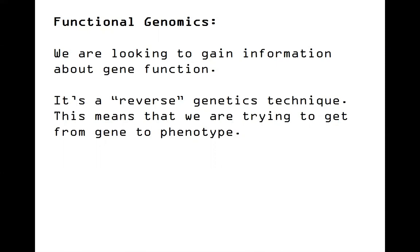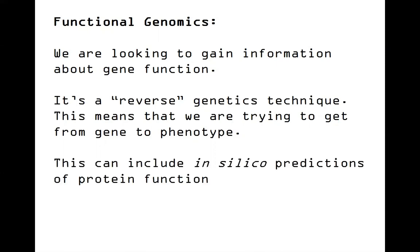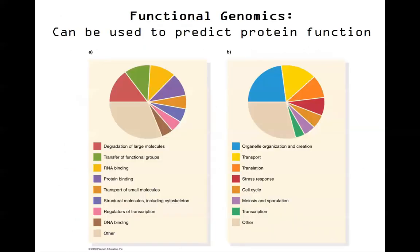We can get information about these genes through computational predictions, or in silico predictions of protein function. Alternatively, we'll also be looking at some experimental approaches today. We'll start with a general overview of how these in silico or computational predictions can help us, looking at ways to lump different genes together based on the sequence of the gene or the protein we get out of it.